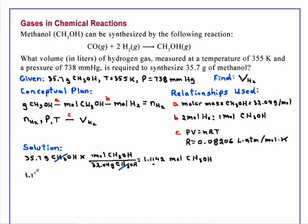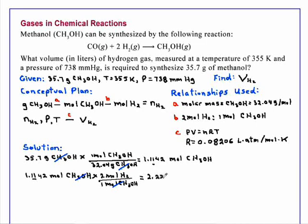1.1142 mole of the alcohol can be related to 2 moles of hydrogen reacting to form 1 mole of the alcohol. Moles of alcohol cancel and this gives us the number of moles of hydrogen that can form, which will be 2.2284 moles of hydrogen.